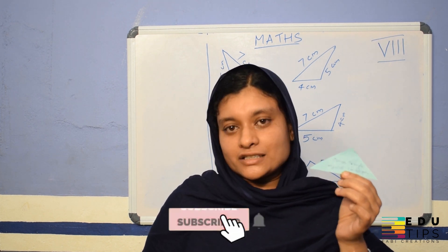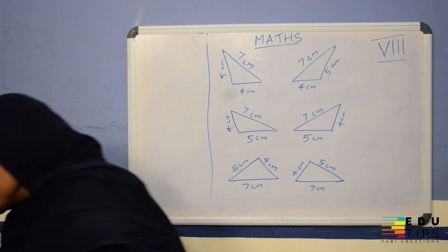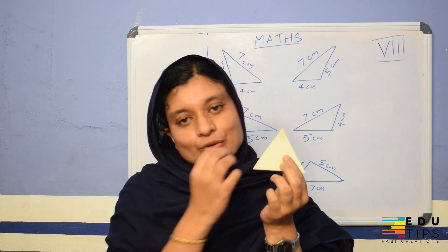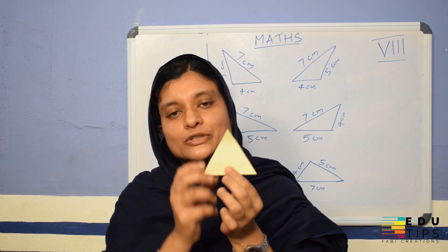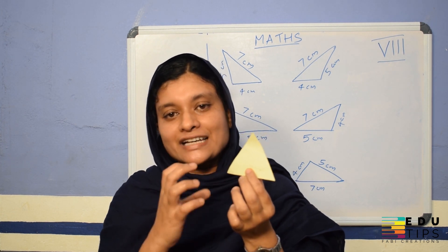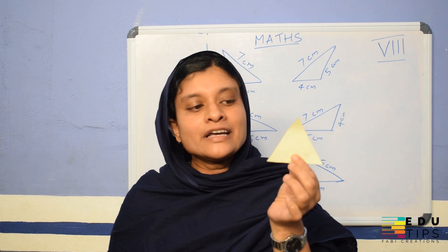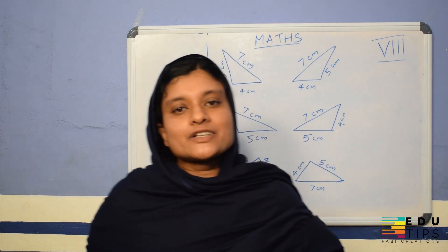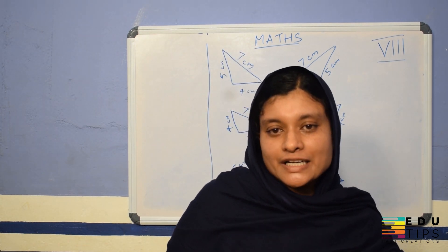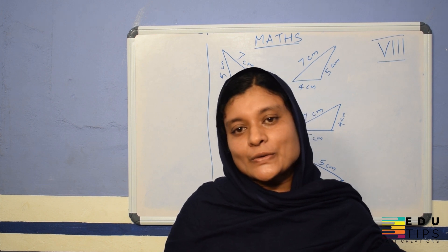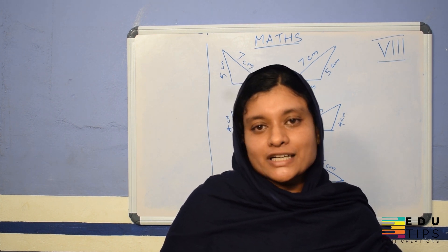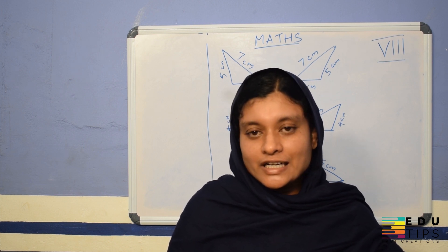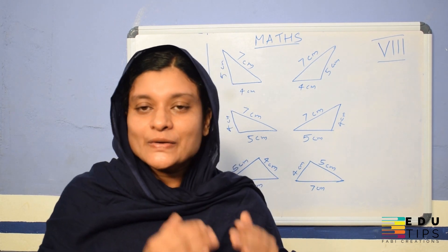We call it an obtuse triangle. Like this, when all three angles are less than 90 degrees, this triangle having all angles less than 90 degrees is called an acute triangle.